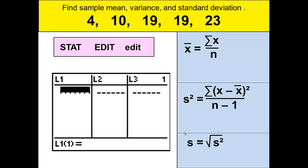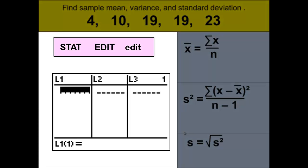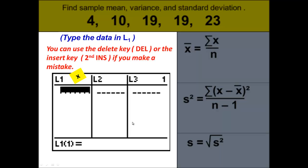To do that, we will press the stat key, then choose edit, and edit under the edit menu. And again, we're putting the x's or the numbers under list 1. We will then type each number or data item, pressing enter after each one.